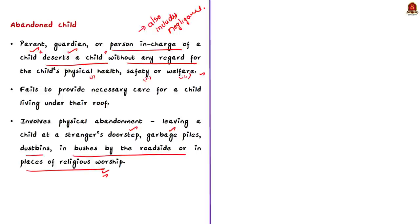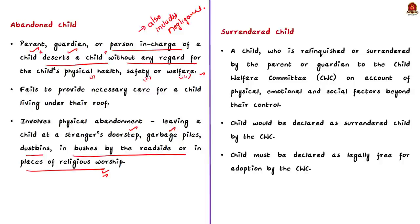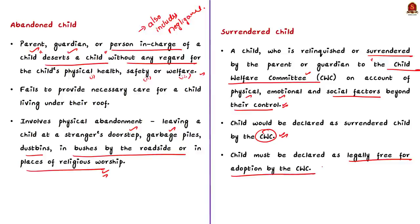How is this different from surrendering a child? A surrendered child means a child who is surrendered by the parent or the guardian to the child welfare committee on account of physical, emotional or social factors beyond their control. The child would be declared a surrendered child by the child welfare committee, and the child must also be declared legally free for adoption by the committee. The major difference is that an abandoned child is deserted by the parent or guardian, whereas a surrendered child is handed over to the child welfare committee.